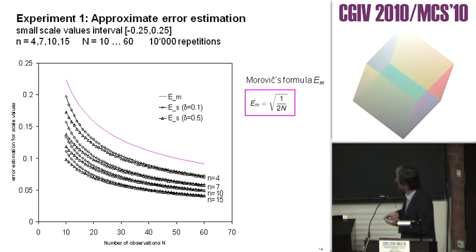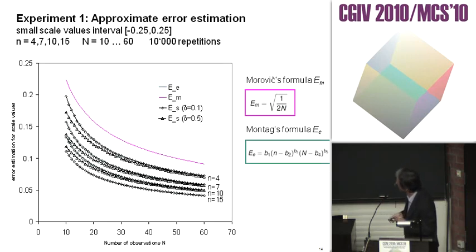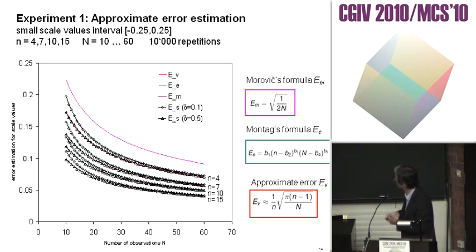If we calculate Morowick's formula, we see it's always overestimating the errors except at the place where small n would be three. Mosteller's formula gives quite good approximation, and the same is true for the approximate error. The difference is as big as the choice of what kind of bias I use.